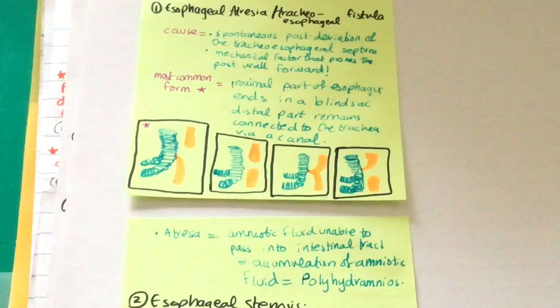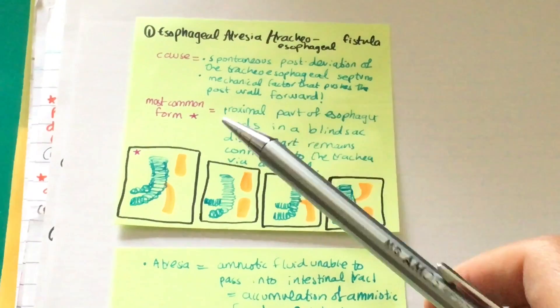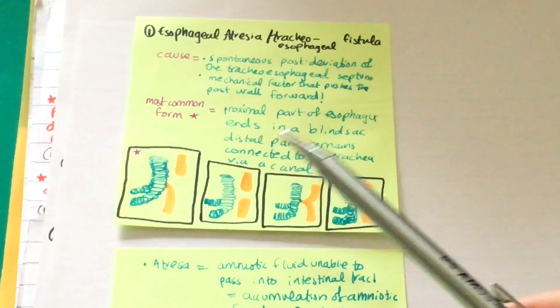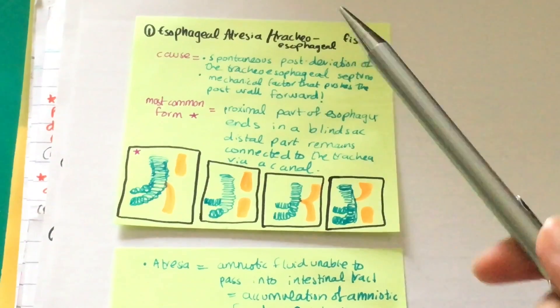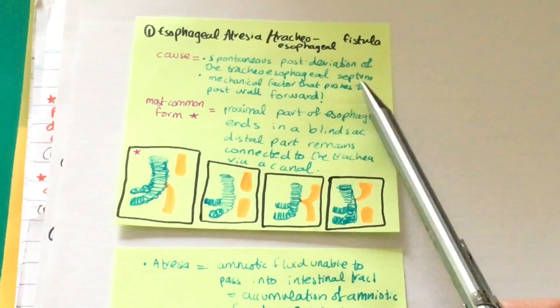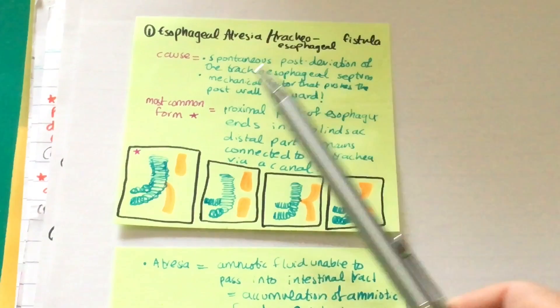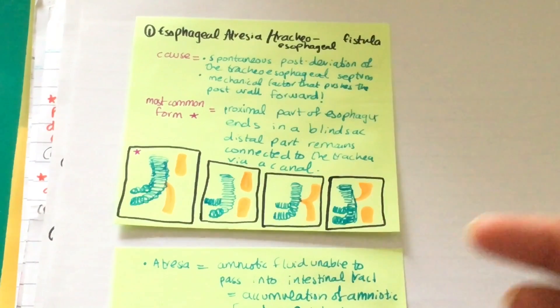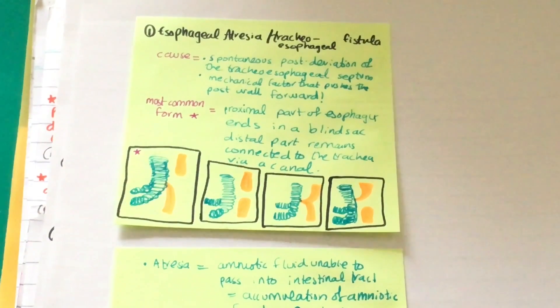Esophageal atresia: the cause is the spontaneous posterior deviation of the tracheoesophageal septum, or a mechanical factor that may push the posterior wall forward.